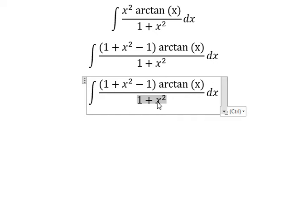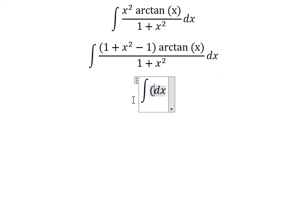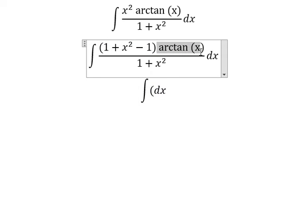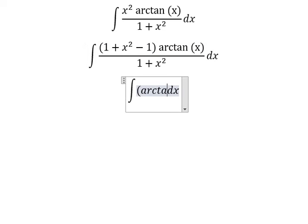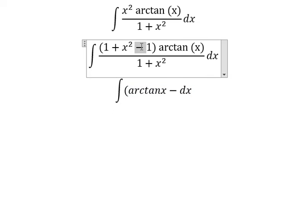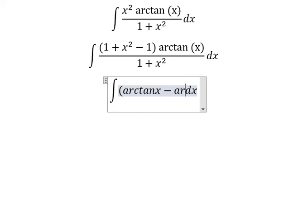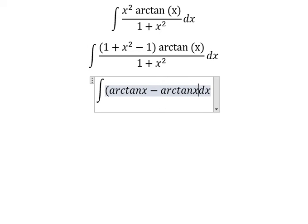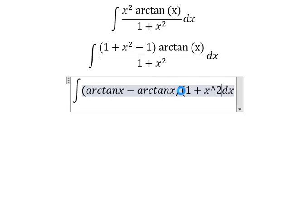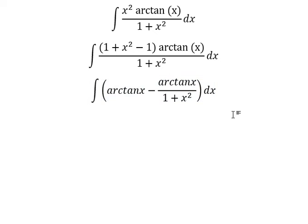We get number one, so that means we will have arctan(x) multiplied by number one. After we divide, we have arctan(x) minus, with a negative sign here, and we have arctan(x) over one plus x squared. Now I will concentrate on this part only.